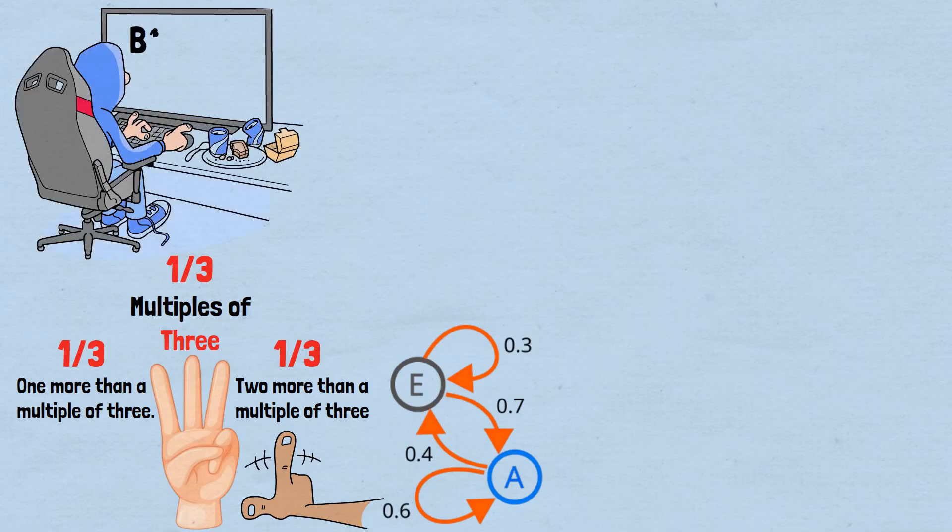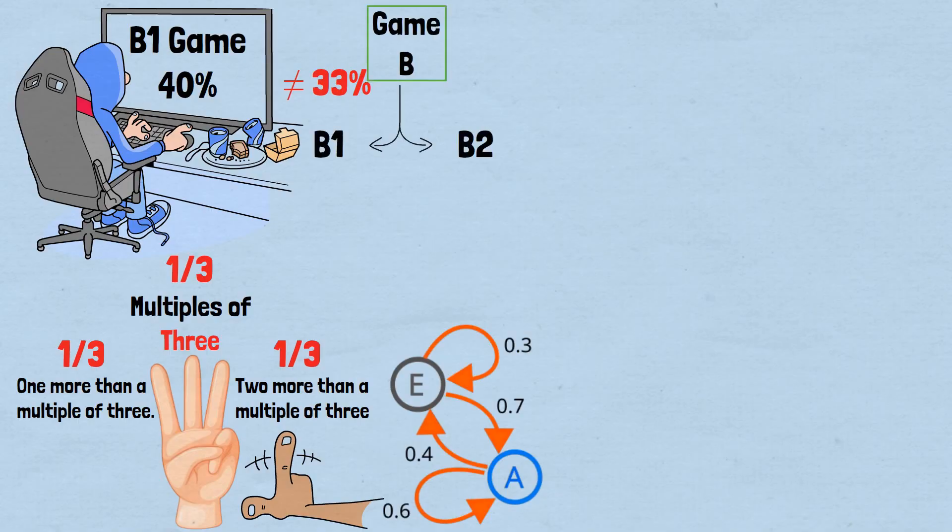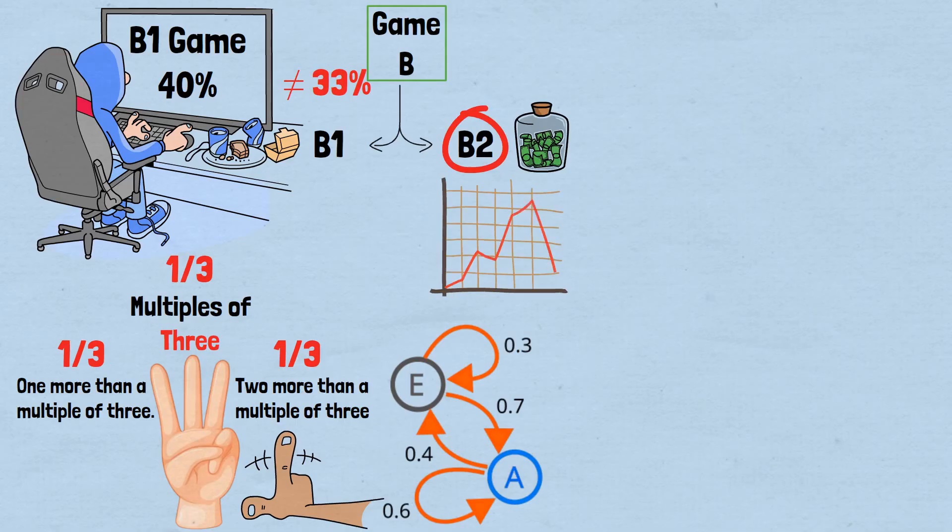When we analyze the Markov chain mathematically, your probability of being forced to play the terrible B1 game is actually closer to 40%, not the 33% you might expect. The winning edge that the good B2 game provides simply isn't enough to compensate for the devastating losses from B1. The result is that Game B, despite its complexity and the generous B2 component, is also a guaranteed long-term loser.